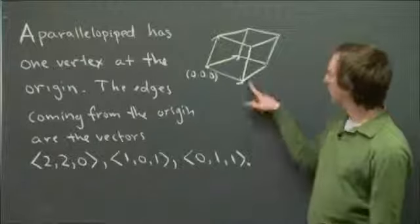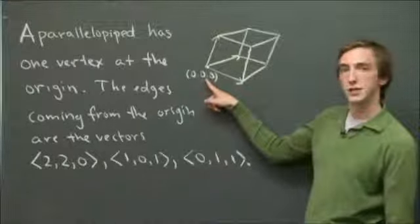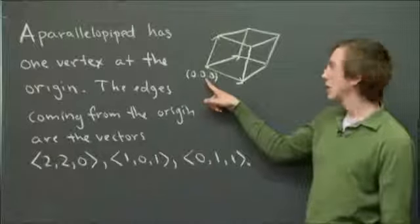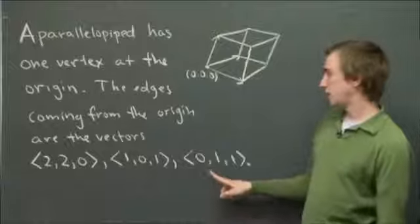So here we've got the parallelepiped drawn. It has one of its vertices at the origin (0,0,0), and the other three edges are given to us with these coordinates here.